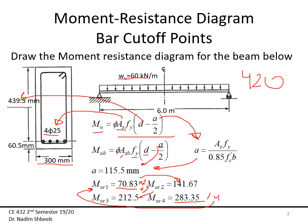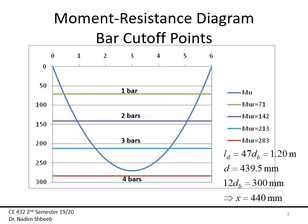Since this approximate value is usually less than the actual resisting moment, it is conservative and acceptable. The more exact approach would be to calculate 'a' separately for one bar, two bars, three bars — but that's too much work and not necessary. Simply calculate the maximum moment for all bars and divide by the number of bars to get the resistance per bar.